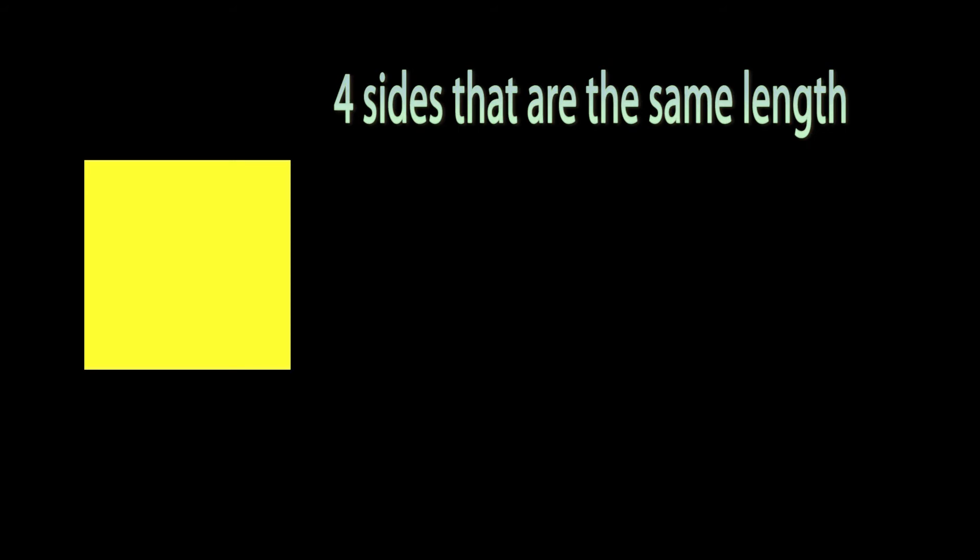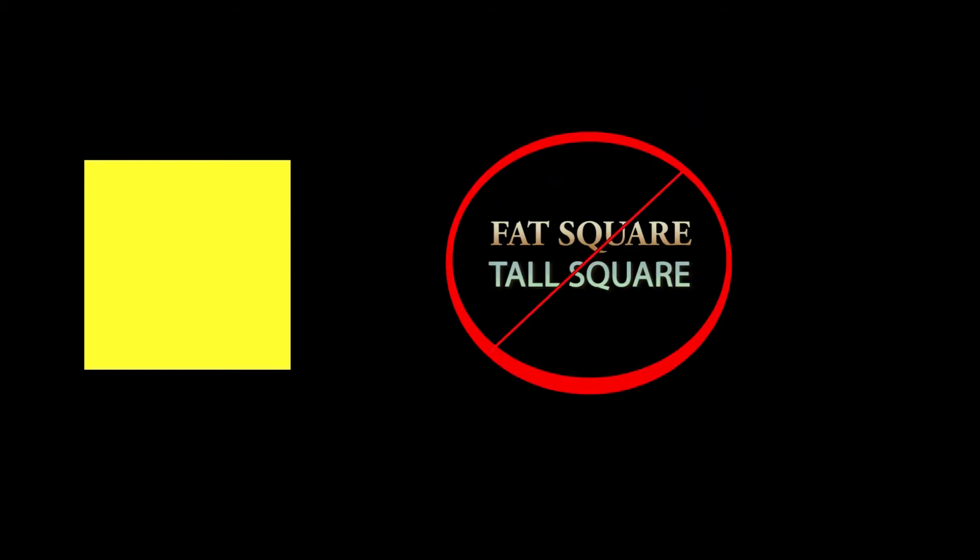Remember this, though. Squares have four sides that are the same length. They've got four 90-degree angles, and you'll never say fat square or tall square.